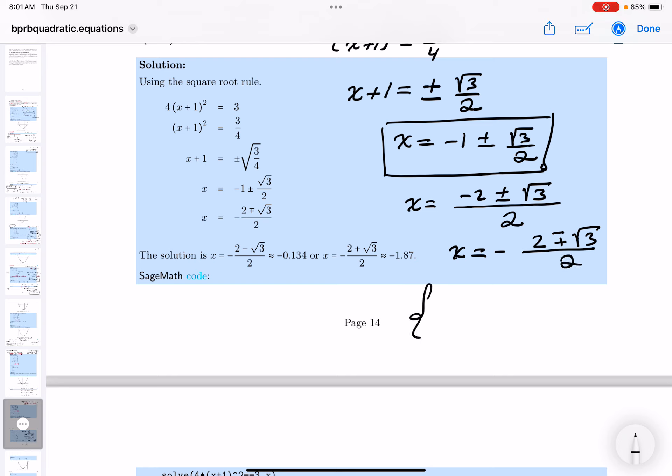I'm going to write down the two numbers. First number is going to be the opposite of (2 - √3)/2. The second number is the opposite of (2 + √3)/2.